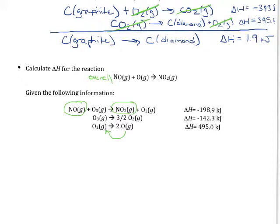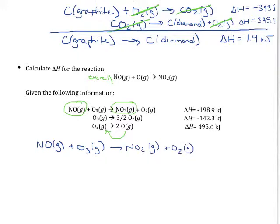When I think about writing this reaction, I know the bottom one is going to be reversed, and I'll need to do something with the middle reaction so that compounds I don't want cancel out. Let's start by writing the first one as is: NO plus ozone (O₃) makes nitrogen dioxide and regular oxygen. Since we didn't change anything, the ΔH stays the same: negative 198.9 kilojoules.